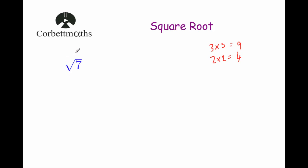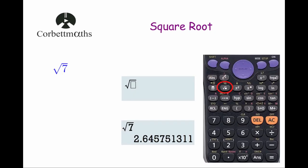If you were asked to work out the square root of 7, it would most likely be on a calculator test. All scientific calculators will have a square root button — I've circled mine here. To work out the square root of 7, press that button and the square root symbol will appear on the display, then press the number 7 and press equals, and it will give you the square root of 7, which is 2.645751311.